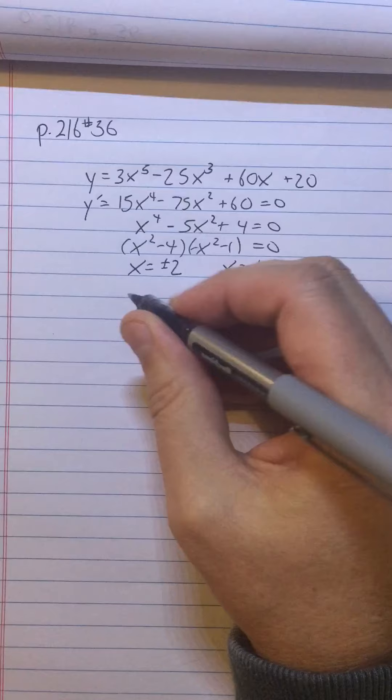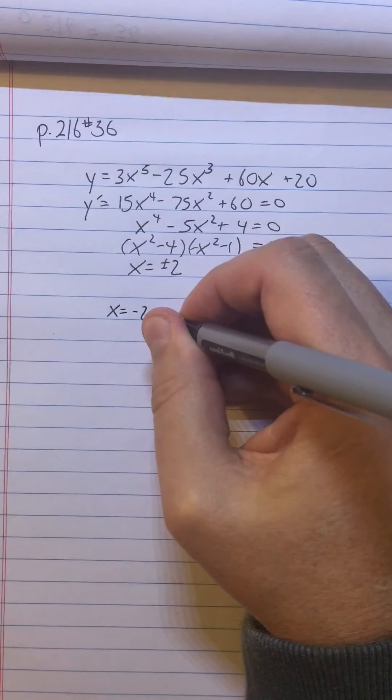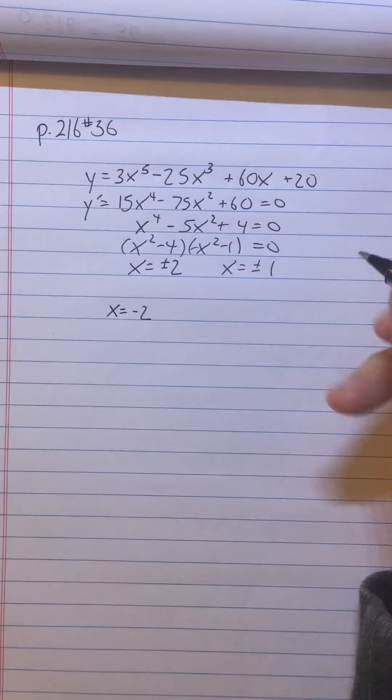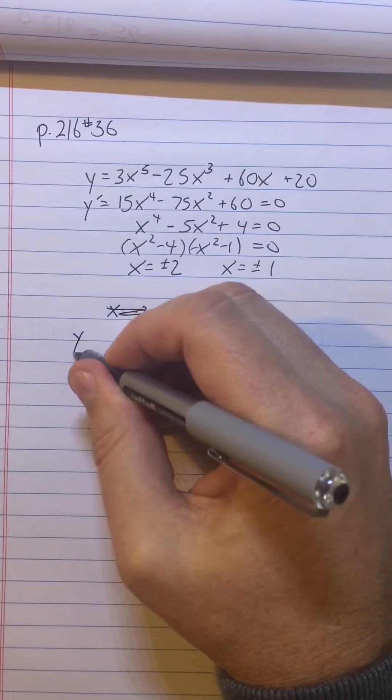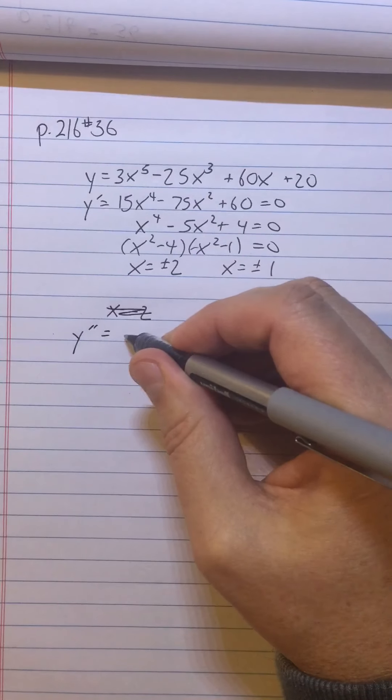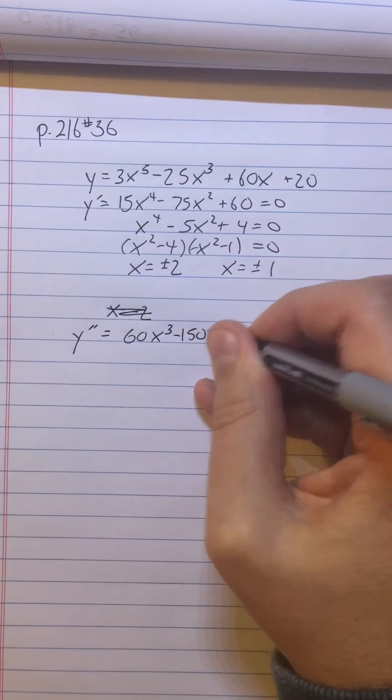We just test each of them. I'll take them in order, x = -2. We're gonna do, oh we need y double prime in order to do the second derivative test. So let's just put that first. So y'' = 60x³ - 150x.